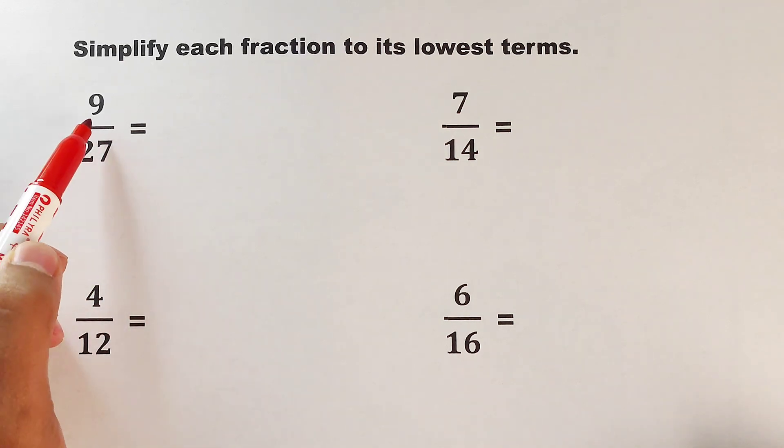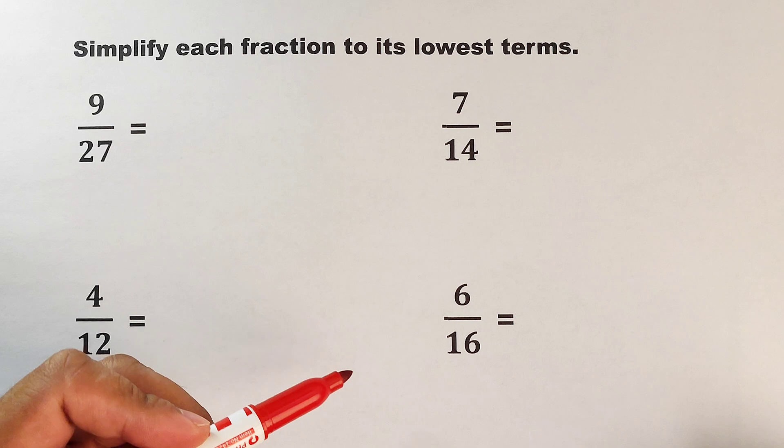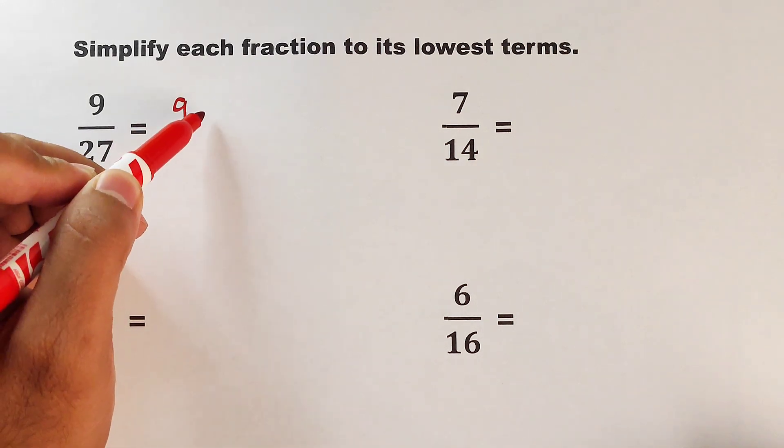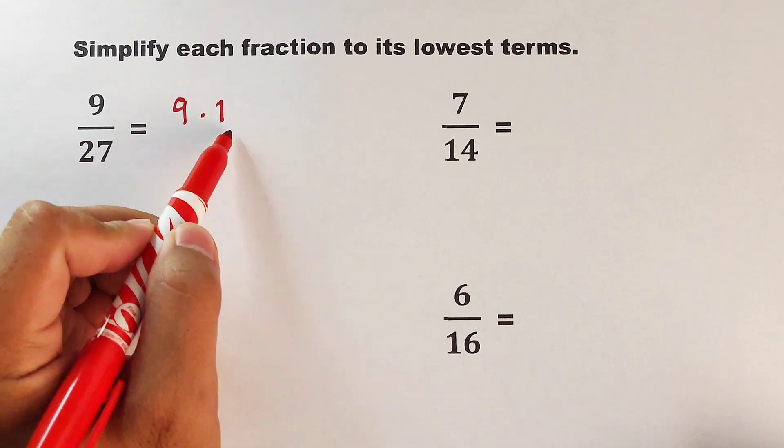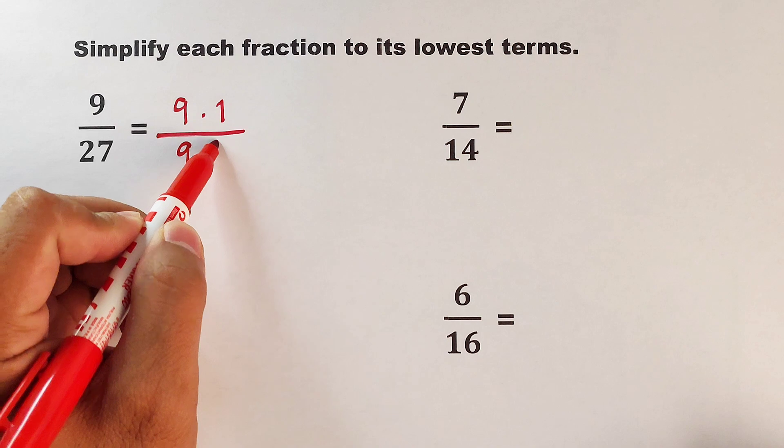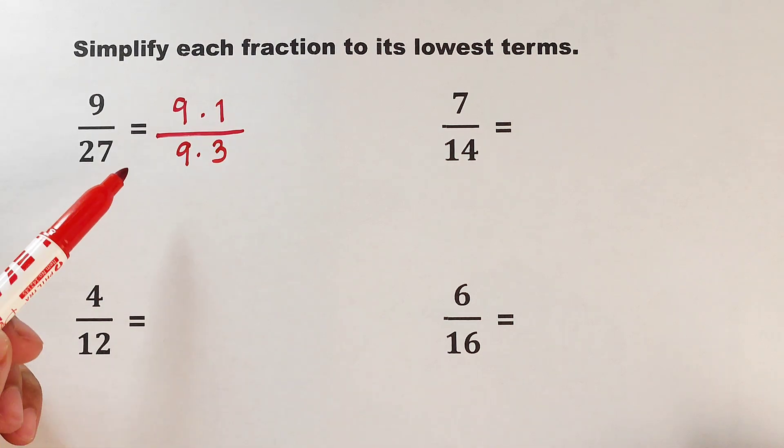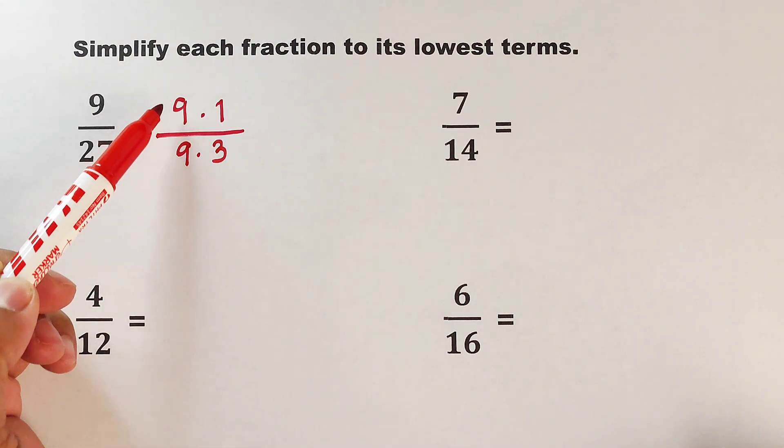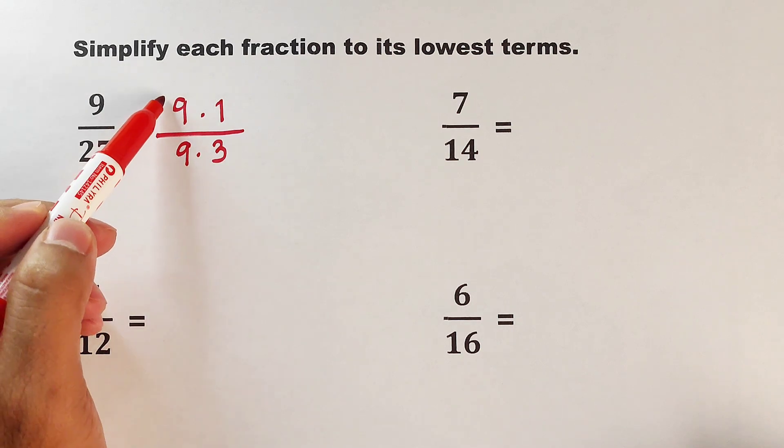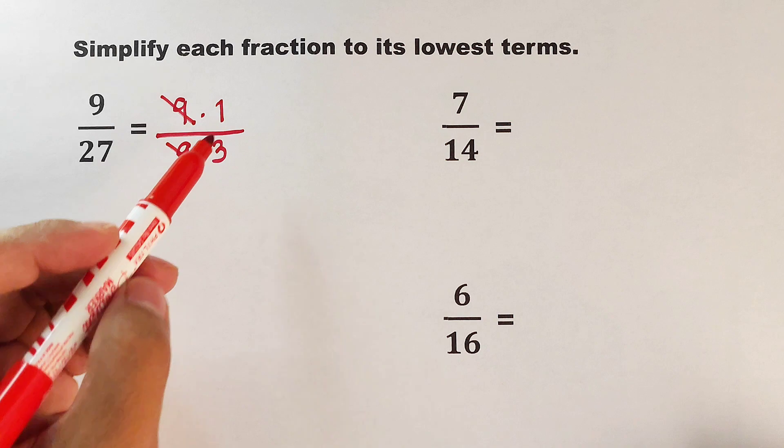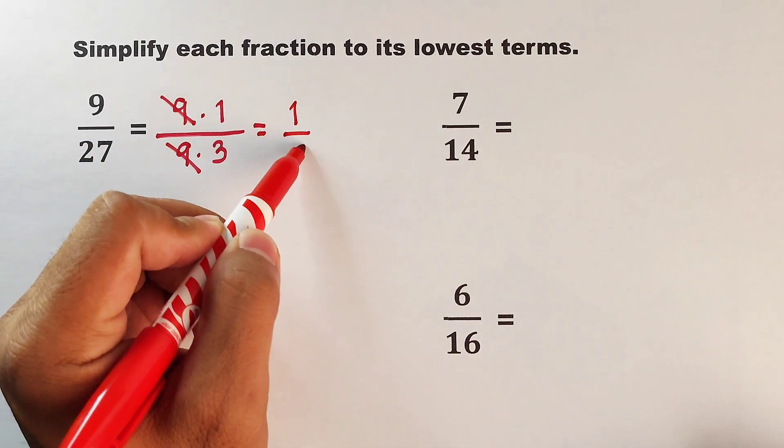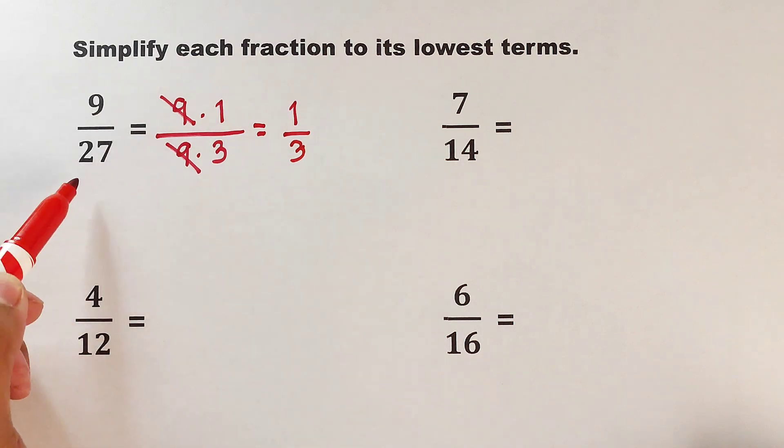For example, this 9 can be factored out as 9 times 1 or 3 times 3. But I will choose 9 times 1 because this 27 can be expressed as 9 times 3. As you can see, both from the numerator we have 9 and the denominator we also have 9. In this case, we can cancel this out. What we have here is 1 over 3, and this is the final answer or the lowest term of 9 over 27.